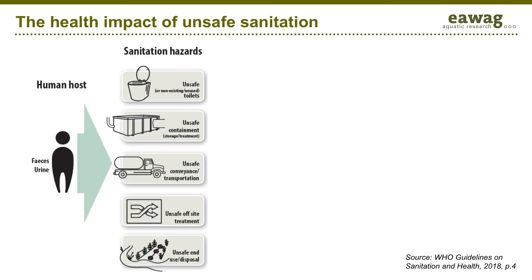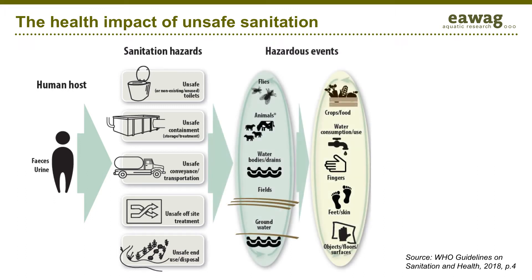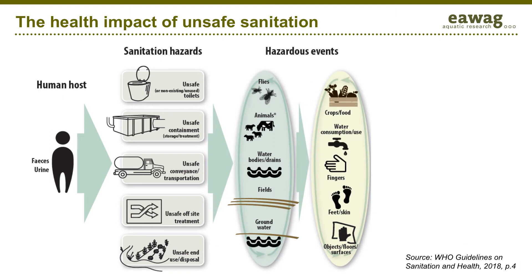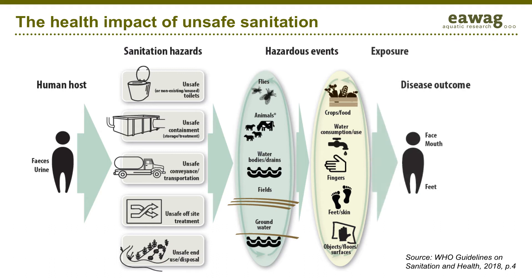This figure developed by WHO highlights the different disease transmission routes and how unsafe sanitation may impact our health. Sanitation hazards can happen along the whole sanitation service chain. Think for example about unsafe toilets, or septic tanks overflowing on the streets, or fecal sludge being dumped in the drain. Then, daily life may bring us involuntarily in contact with sanitation-related pathogens. Think about flies, fresh vegetables from urban agriculture, or contaminated groundwater. Pathogens also spread through contact with contaminated surfaces and dirty hands. Children are especially at stake. The higher the exposure, the higher the chances you have to get sick.